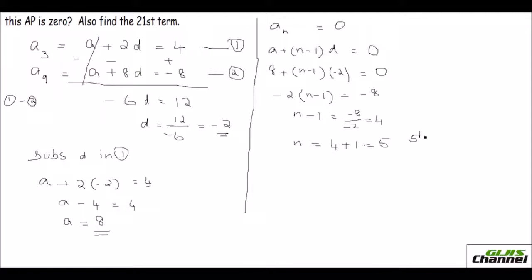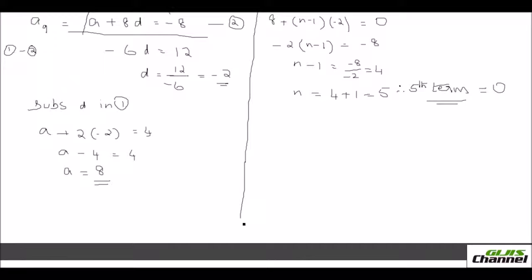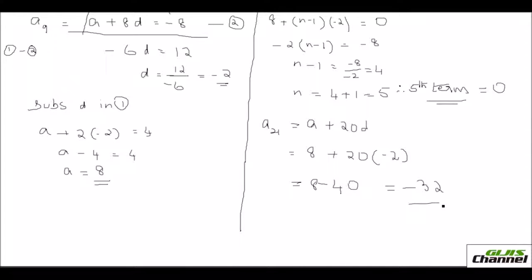So the 5th term is zero. There's also a part asking to find the 21st term. a21 = a + 20d = 8 + 20(-2) = 8 - 40 = -32. So the 21st term is -32. We're done with this problem.